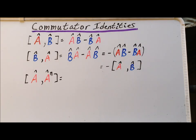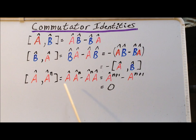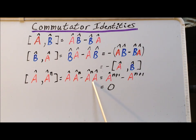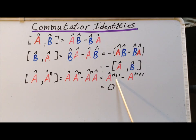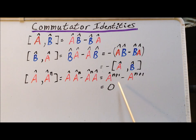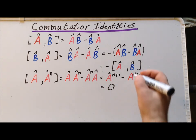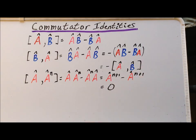Next, we are interested in how an operator commutes with some integral power of that operator — specifically A with A to the n. By the definition of the commutator, this gives us A times A to the n minus A to the n times A. Using properties of exponents, the first term gives A to the n+1 and the second gives minus A to the n+1, so this is identically zero. Therefore, any operator commutes with any power of itself.